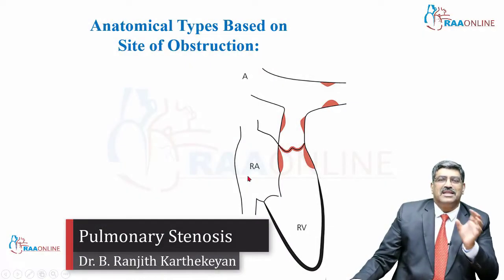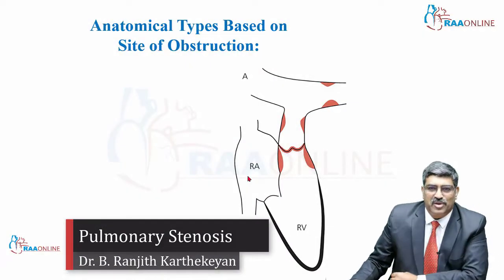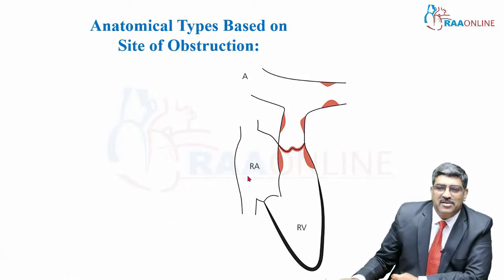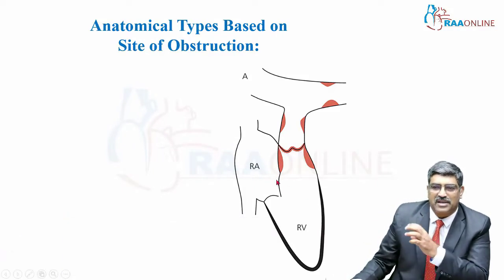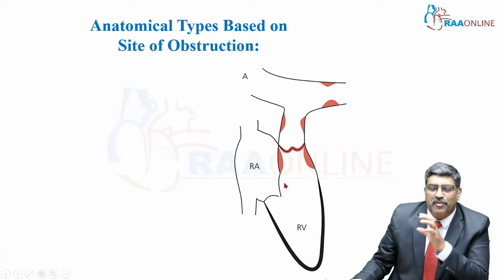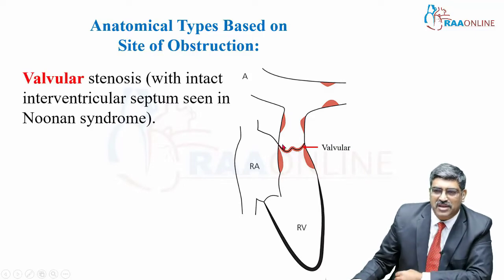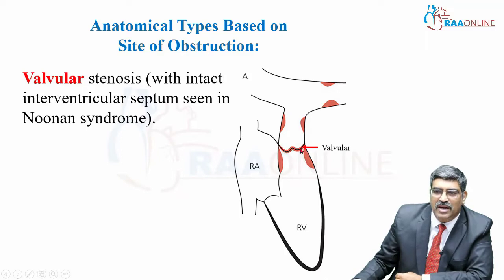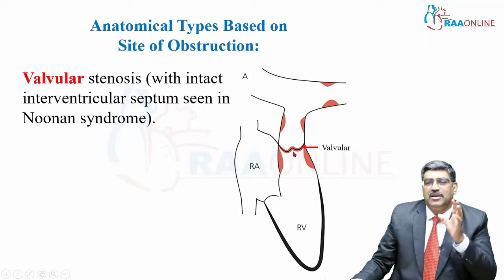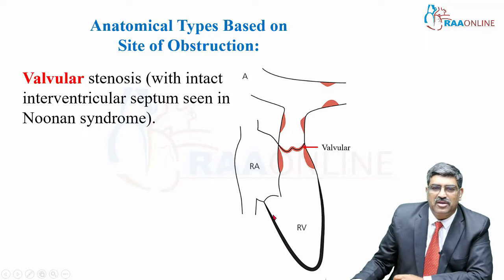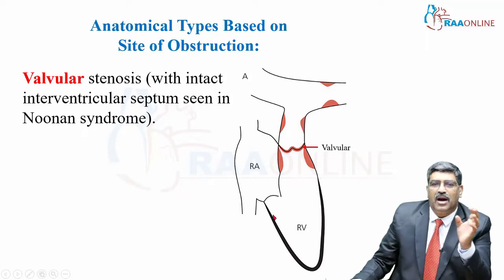Pulmonary stenosis is classified based on the site of obstruction. The commonest type is valvular obstruction, where the stenosis is located at the valve. It is most commonly associated with an intact ventricular septum and is seen in Noonan syndrome.